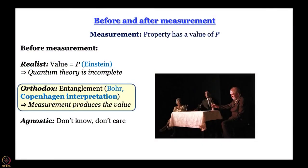The third view is that of an agnostic: we do not know what it was and we do not care — but that is an opportunistic view. A play called Copenhagen, quite popular worldwide, depicts a dialogue between Bohr and Schrödinger, bringing out the conflicts in the minds of the founding fathers of quantum mechanics. The outcome is the Copenhagen interpretation: the system exists before measurement in an entangled state, and it is the measurement that produces the value.